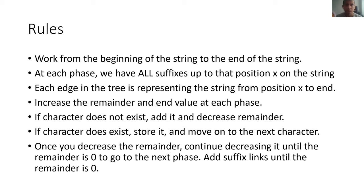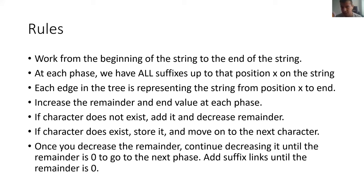For example, if you had the string C-A-T and wanted to represent an edge with just the A in the middle, it would just be index 1 to index 1. At each phase, for each letter, we increase the remainder and the end value. The remainder is used to further create part of the string. The end value makes sure that we add the last value to the string. If the character we're adding does not exist, we just add it in and decrease the remainder. If it does exist, we highlight where it exists and continue on.